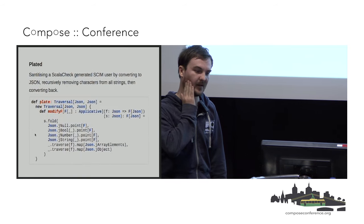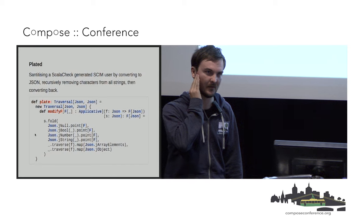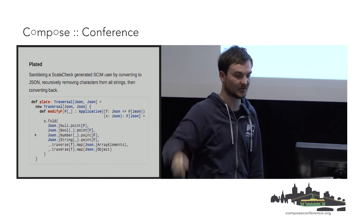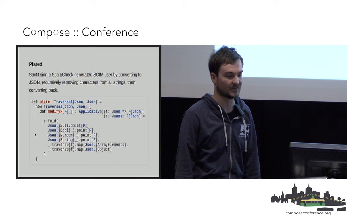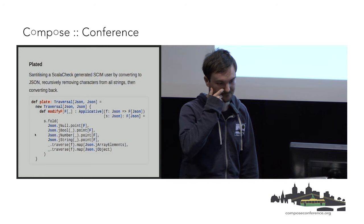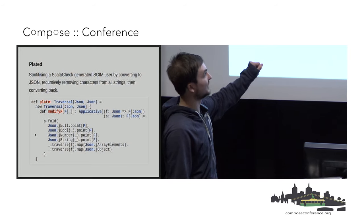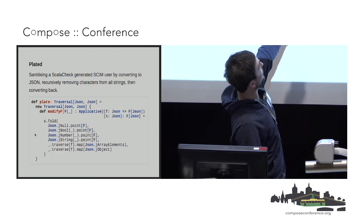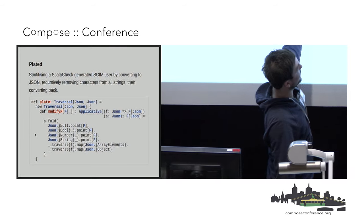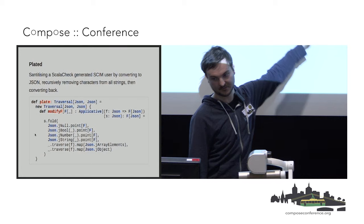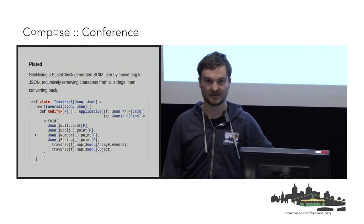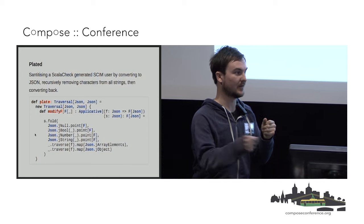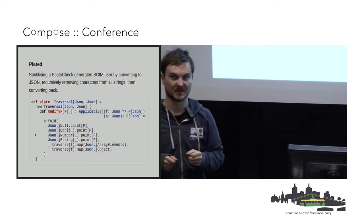There's something called Plated in Monocle — it's a way of talking about recursive data structures. JSON is a good example of a recursive data structure. We can write a Plated instance which basically just runs a function over every recursive part of a JSON data structure. For every recursive element, we run a function over it.